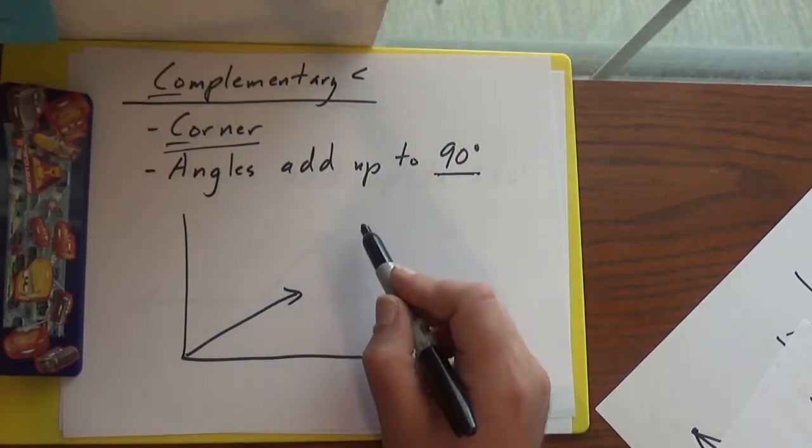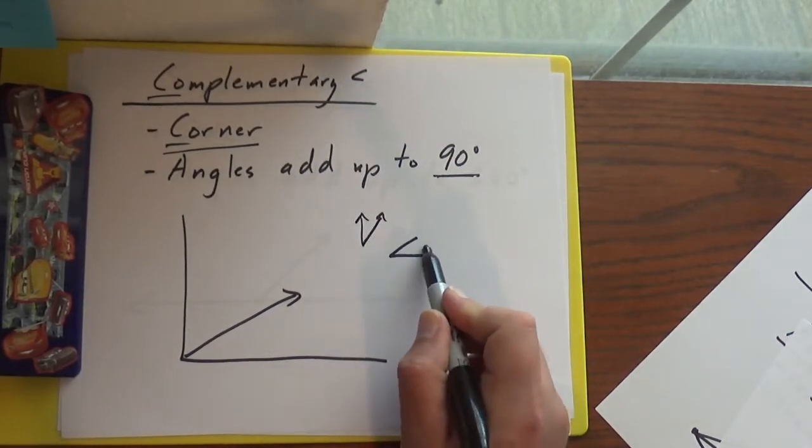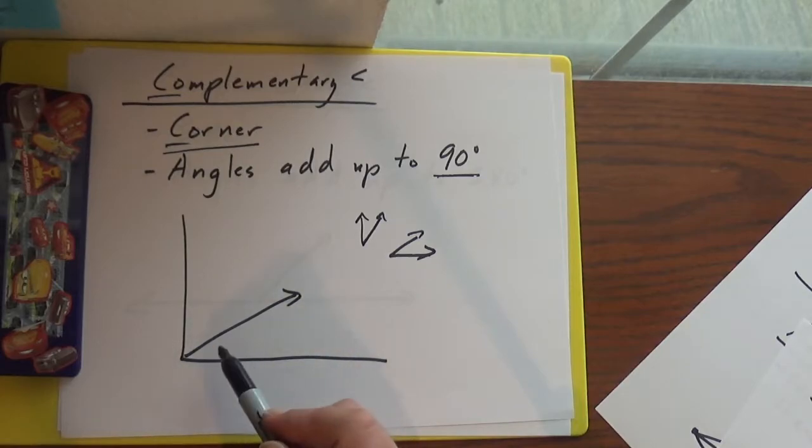They don't have to be beside each other. I could have an angle here and a separate angle off somewhere else. And if they add up to 90, they're complementary. This example here, they're next to each other. But like I said, they don't have to be.